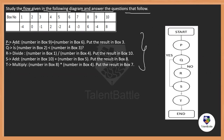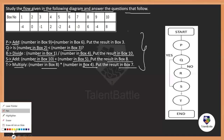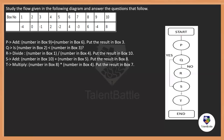The flowchart has steps P through T. P: add box[9] + box[6], put result in box[3]. Q: check if box[2] < box[3]. R: divide box[1] by box[4], put result in box[10]. S: box[10] + box[5], put result in box[8]; then multiply box[8] by box[4], put result in box[7]. If Q is yes, skip R and go directly to S; if no, follow all steps R then S then T.